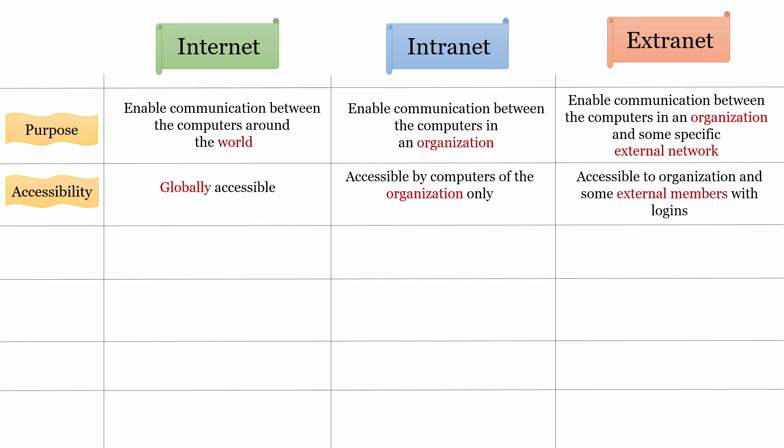If we talk about the accessibility: being a global network, internet is globally accessible. Being a private network, intranet is accessible by computers of the organization only. Being a shared network, extranet is accessible to the organization and some external members with logins.